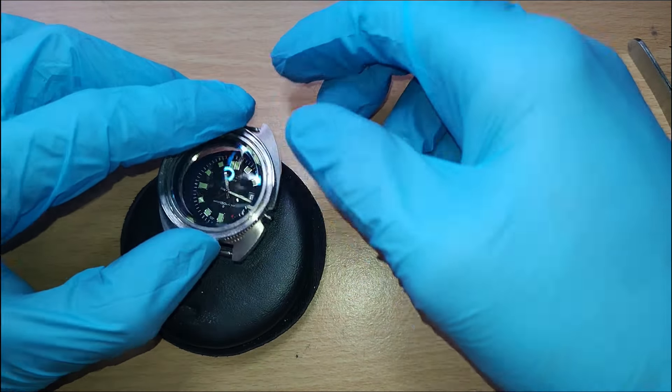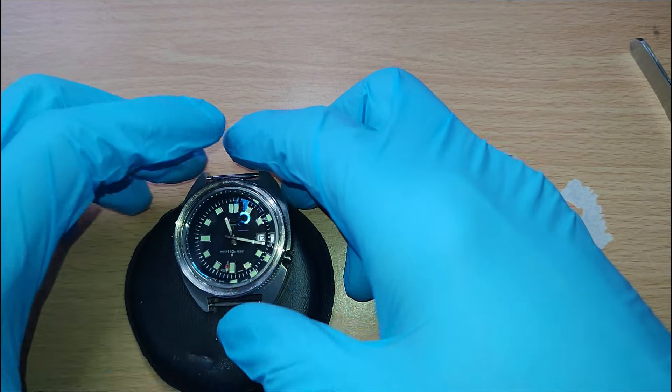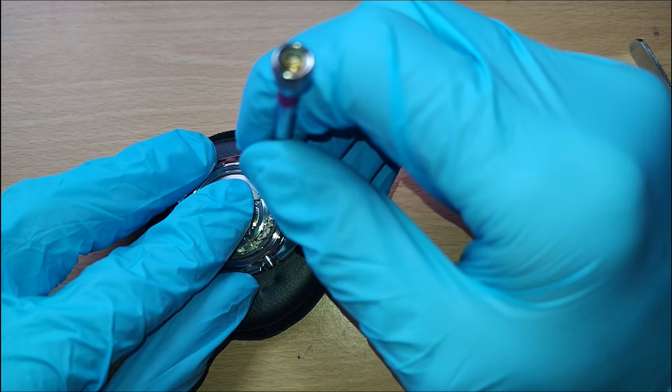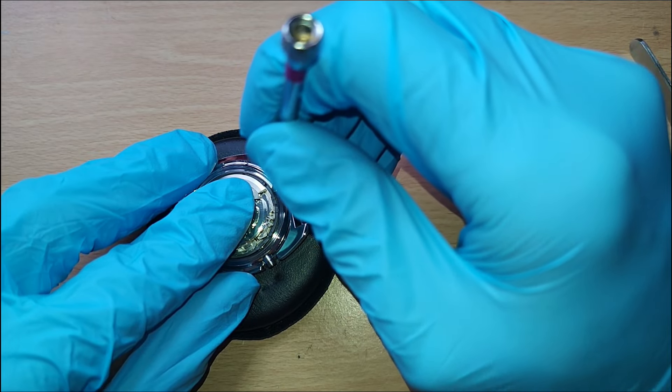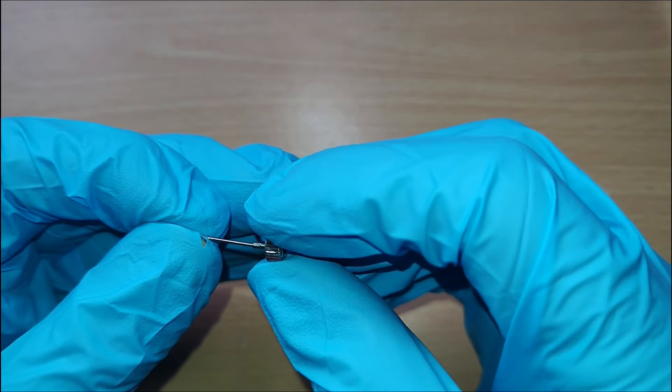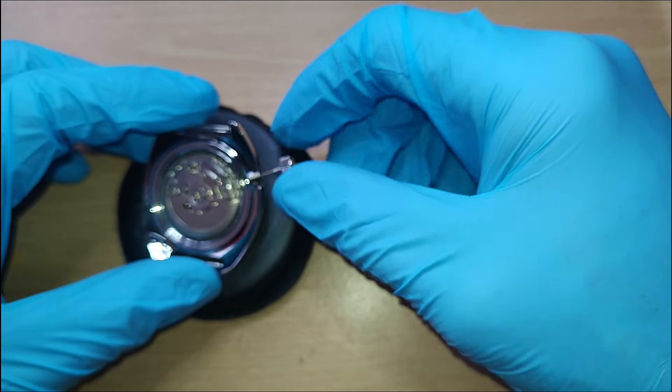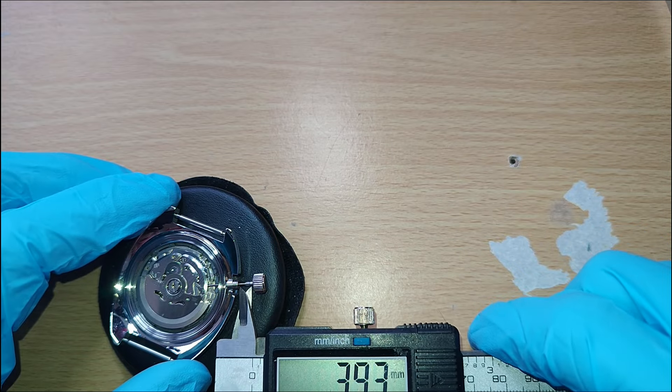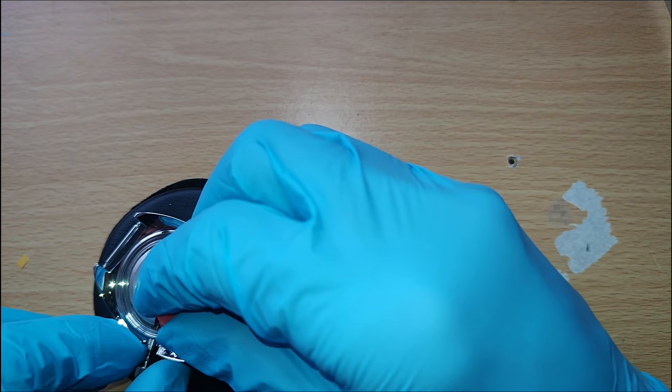We're going to put the movement back inside the case now so that we can fit the crown and stem. Pop the movement back into the case and then use a screwdriver or whatever you've got in order just to push it down inside the case on the plastic case holder. Connect the crown to the stem that you have, normally comes with the movement. Then what you want to do is put it into the case, into the movement. Just feed it in, twist it about lightly, and it will connect.